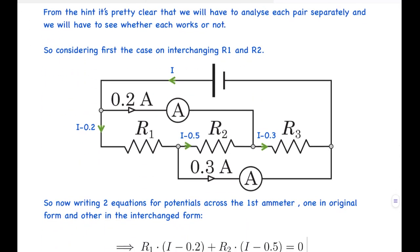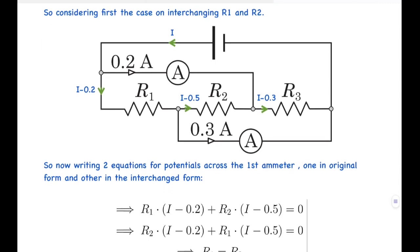From the hint it's clear that we'll have to analyze each pair separately and see whether each works or not. First let's consider the case of interchanging resistances R1 and R2. Assuming the current to the battery is I, the current in this branch will be I−0.2, in this branch it will be I−0.5, and in this branch it will be I−0.3. Writing the equation of potential difference between these two points using Kirchhoff's law: R1×(I−0.2) + R2×(I−0.5) = 0.